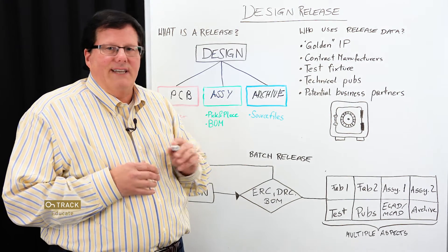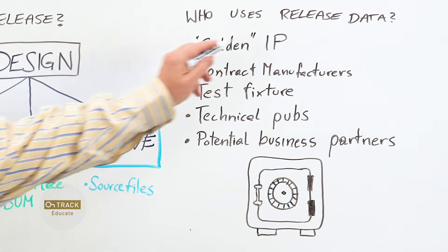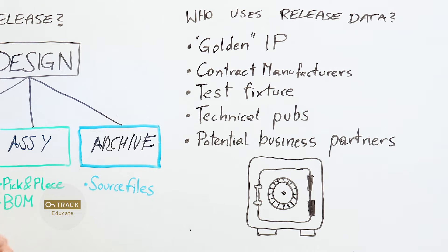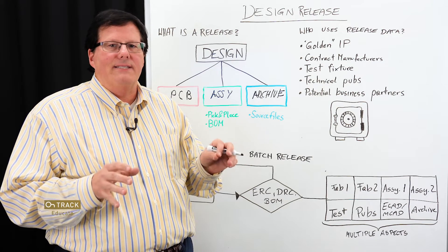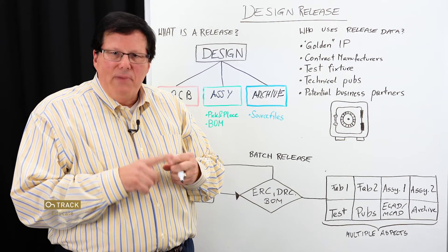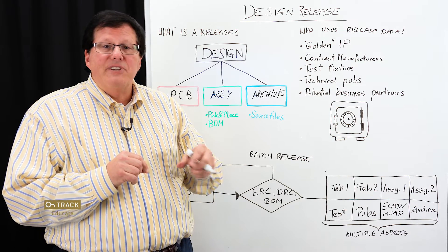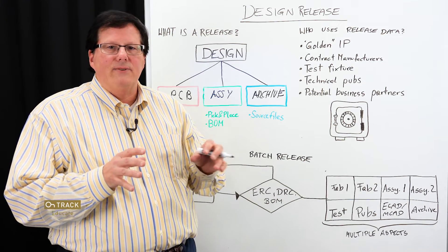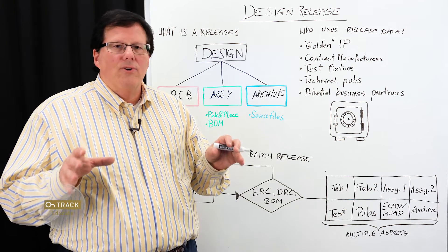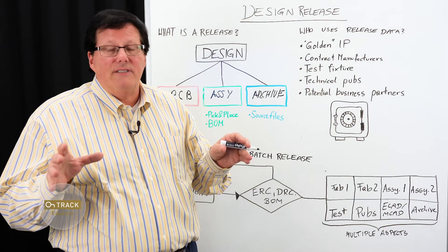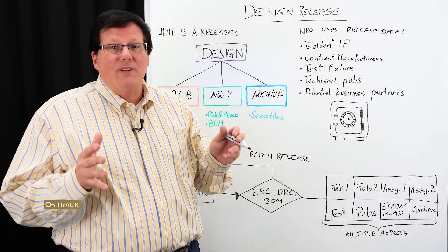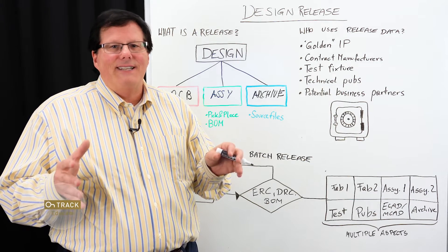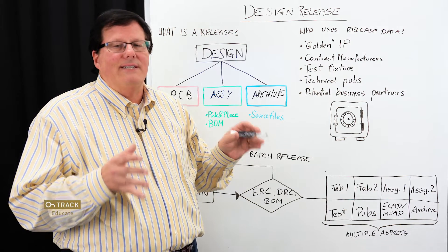So who really uses release data? Who are the collaborators involved? First and foremost, release data is the golden IP of an enterprise. Back in the earlier days of my career, when we would release a package, we literally released it in physical form — with paper, with film. We'd even include ROM chips with device software, all packaged into an envelope and submitted to a fortified room, not unlike a bank vault, impervious to natural disasters and fire. That's where we stored the fruits of the design team's labor.